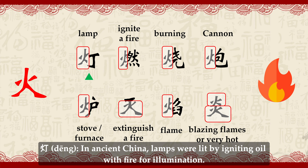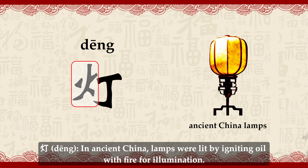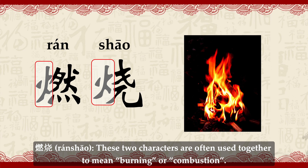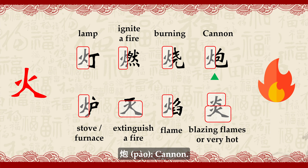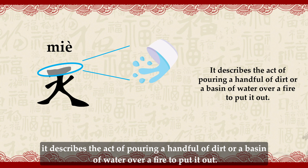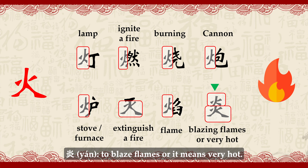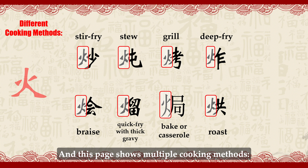For example: Dēng (灯) — in ancient China, lamps were lit by igniting oil with fire for illumination. Rán (燃), to ignite a fire. Shāo (烧), the state of burning. Ránshāo — these two characters together mean burning or combustion. Pào (炮), cannon. Lú (炉), stove or furnace. Miè (灭), to extinguish a fire — this character depicts the act of pouring a hand of dirt or a base of water over a fire to put it out.